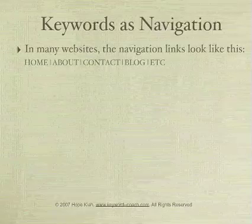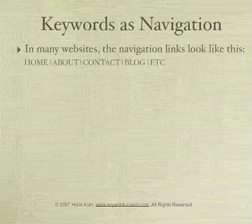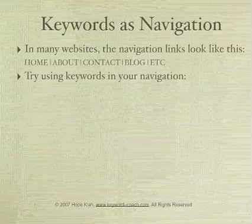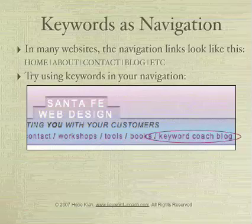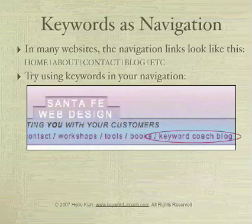Keywords as navigation. In many websites, the navigation looks like this: home, about, contact, blog, etc. Try using keywords in your navigation. In my case, the Keyword Coach blog is a keyword. When you have a blog, if there's any way you can use the keyword as the name of the blog, I highly recommend it — it becomes the title tag in the blog and the H1 tag in the blog. Link to it in your navigation system using those same keywords. When search engines see a key phrase that's popular being linked to a page optimized for that keyword, it's especially appealing to them. So whenever possible, use keywords as links, linking to pages optimized for those keywords.